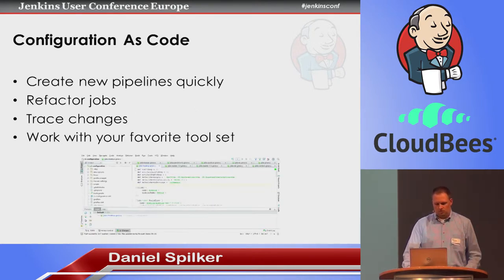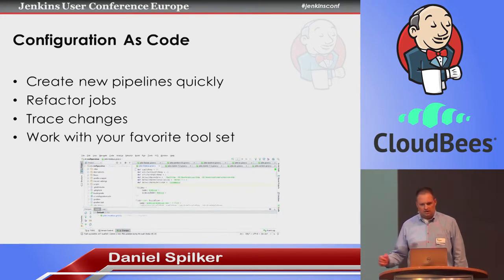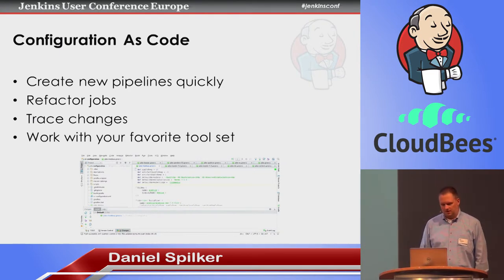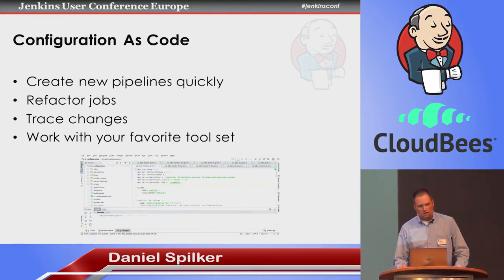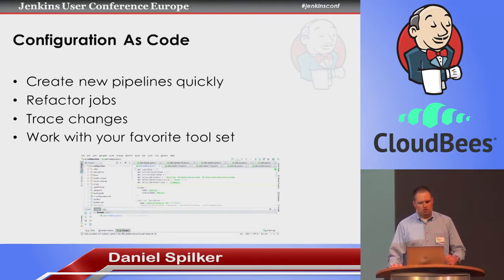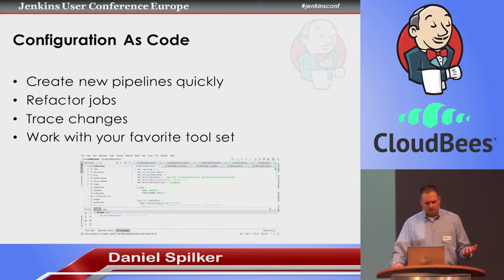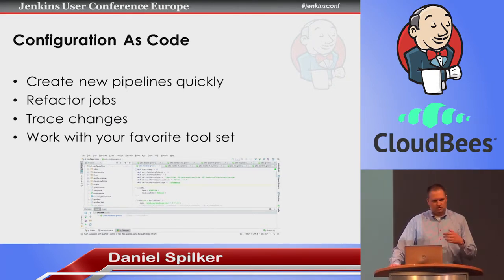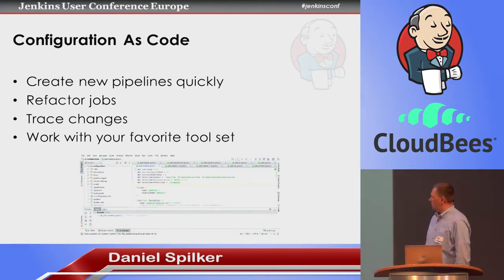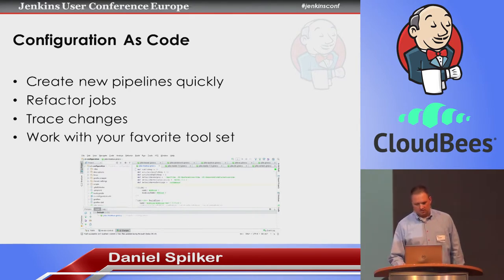So what do we really want to do? We have these fancy text editors today with syntax highlighting and code completion, and we also want to use them to configure our Jenkins. We also want to put our configuration into source code management so we can see who made changes, what they changed, and when the developer left a useful message, we can also see why they made the change. In the end, we want to work with our favorite tool set and not with HTML text areas.